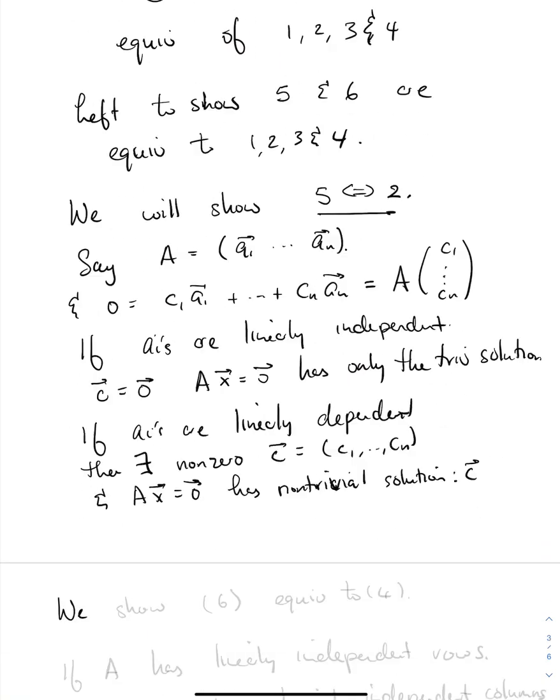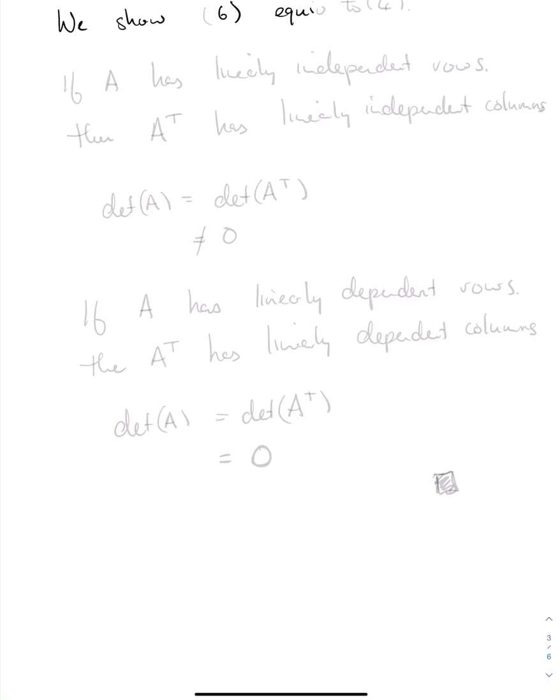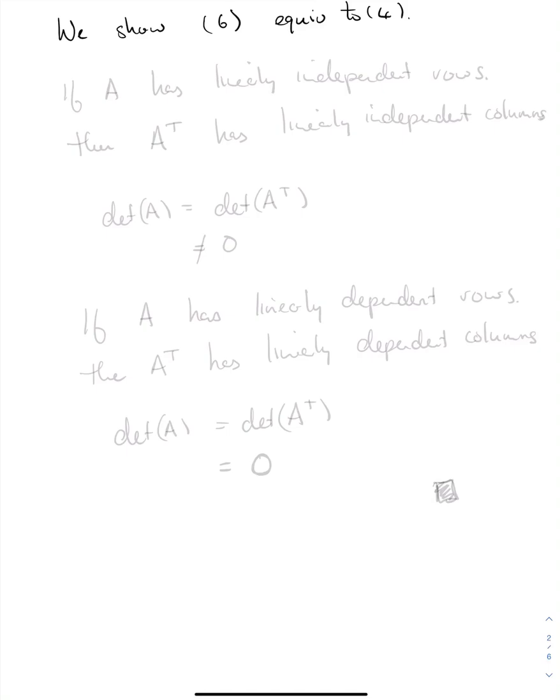Now we're going to show that 6 is equivalent to 4. If A has linearly independent rows, then just by taking the transpose, A transpose has linearly independent columns. We know that the determinant of A is equal to the determinant of A transpose. And since A transpose has linearly independent columns, and we've shown that 5 is equivalent to 1, 2, 3, and 4, we will know that the determinant of A transpose is not equal to zero. If 6 is true, then 4 is true.